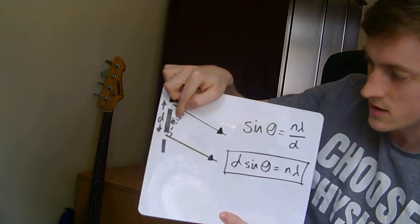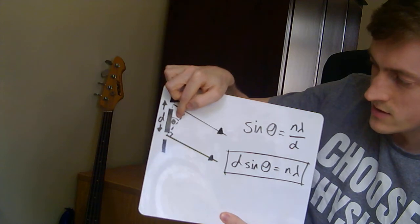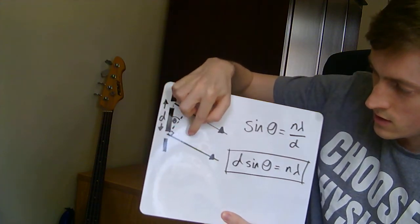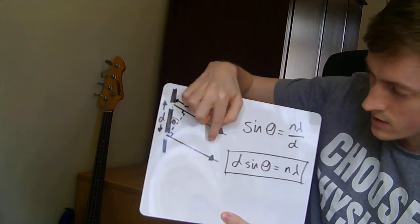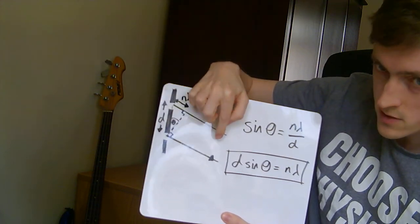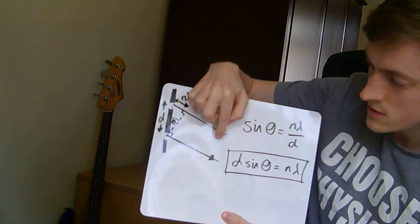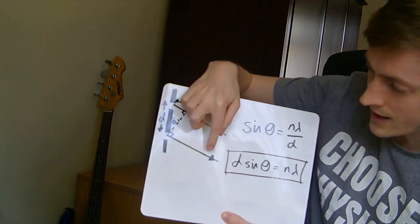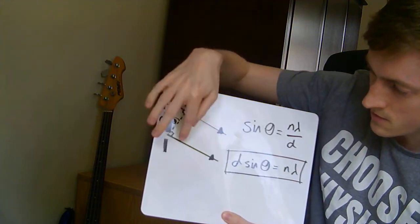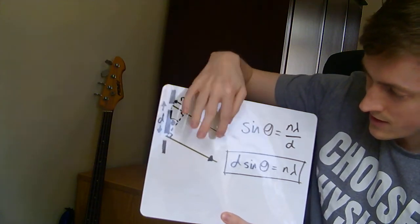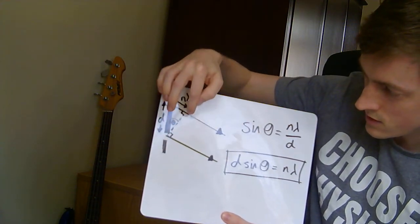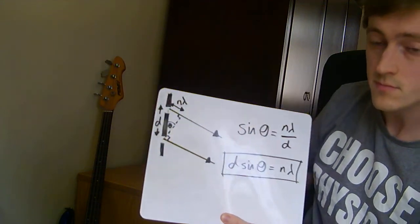It turns out that this theta, this angle here, is the same as the angle between the normal of the diffraction grating, this line coming out here, or you can think of it as the zeroth order, same thing applies, between that line there and the order that we're getting. So between this line here and that, that is the same angle as between this line and that.